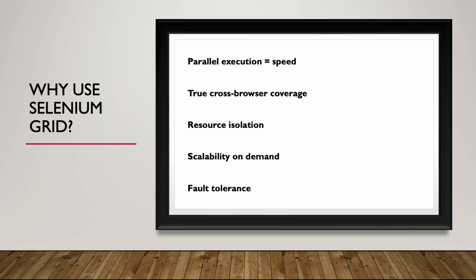Why use Selenium Grid? Parallel execution equals speed — run many tests at once across machines to slash build times. True cross-browser coverage: spin up dedicated Chrome, Firefox, and Edge on different nodes to validate real-world differences. Resource isolation means browser crashes or heavy tests on one VM don't starve others — stable and predictable.